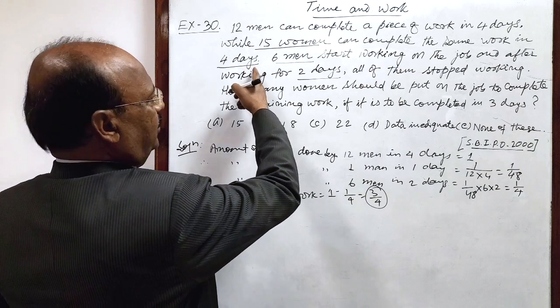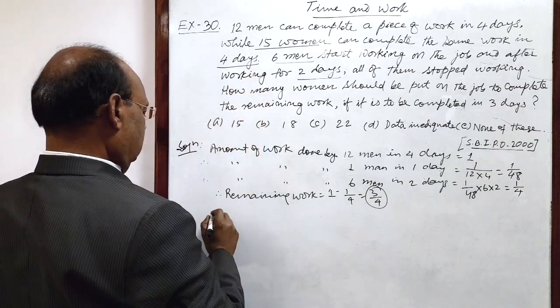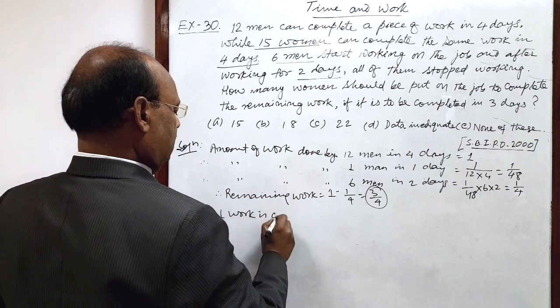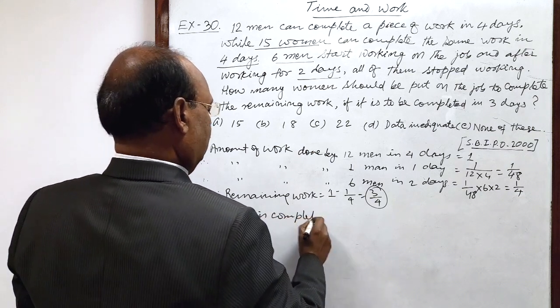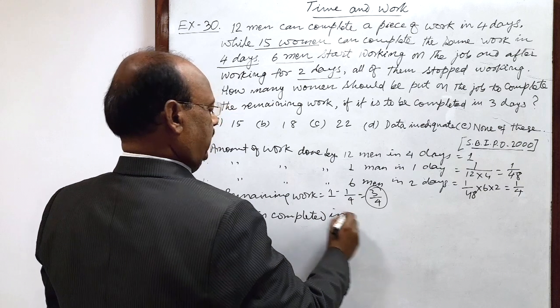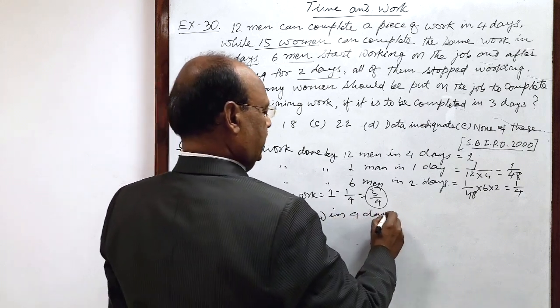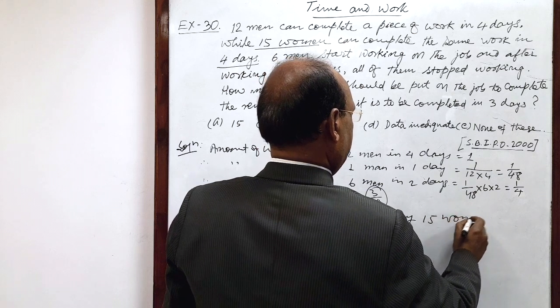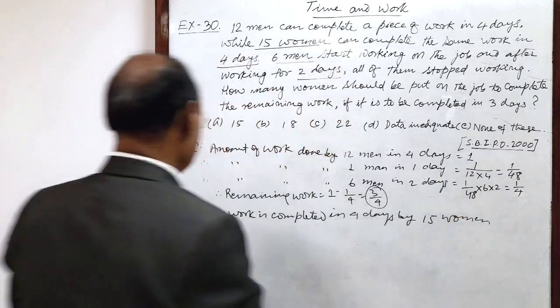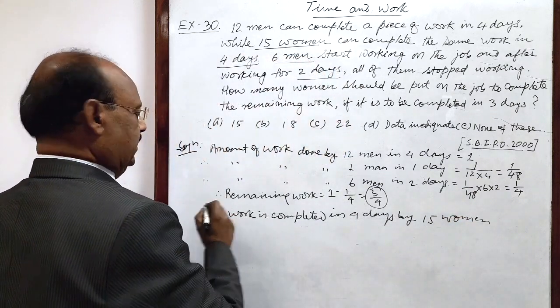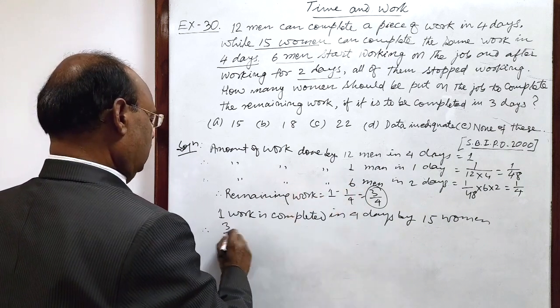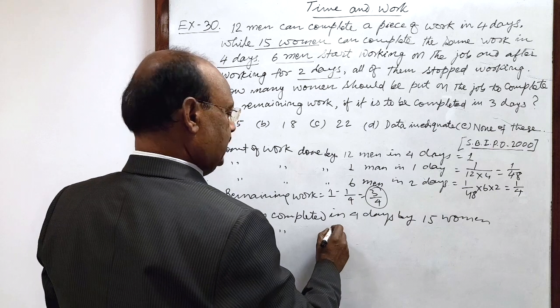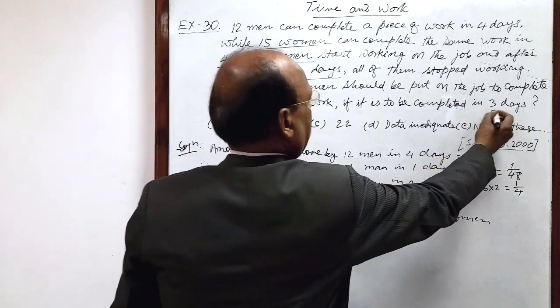Now, 1 work is completed in 4 days by 15 women. Therefore, work remaining is 3 by 4. This 3 by 4 work is to be completed in 4 days by how many women? 15.